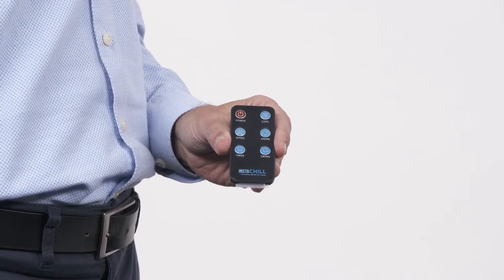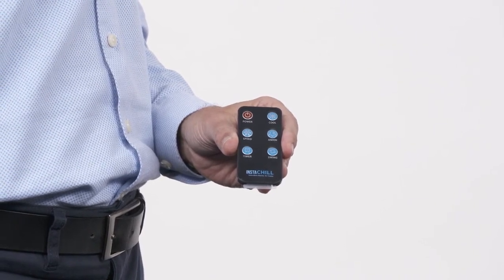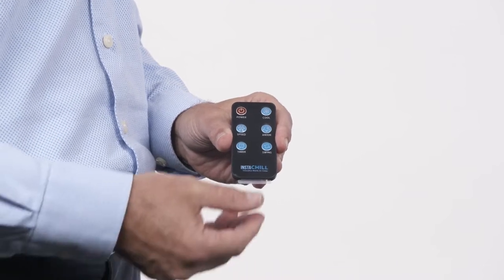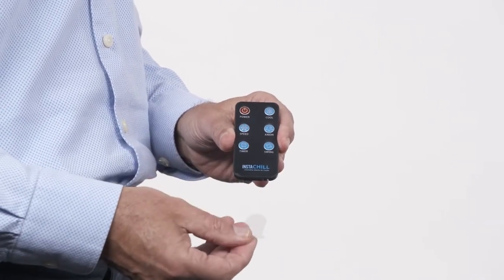Of course, all of these functions can be accessed through the remote. To activate the remote, take it out of the plastic sleeve and pull out the protruding plastic tab.